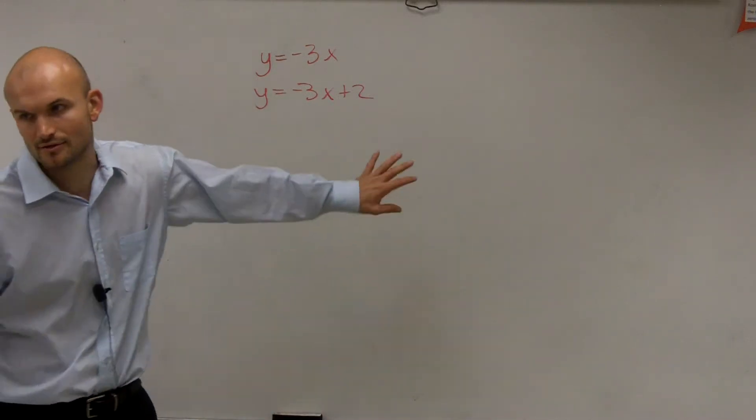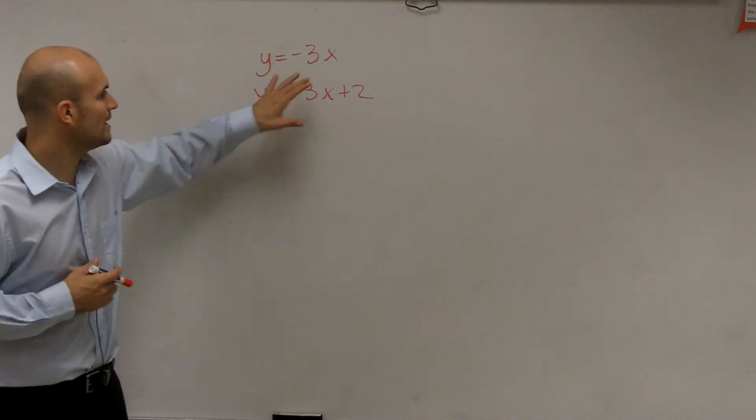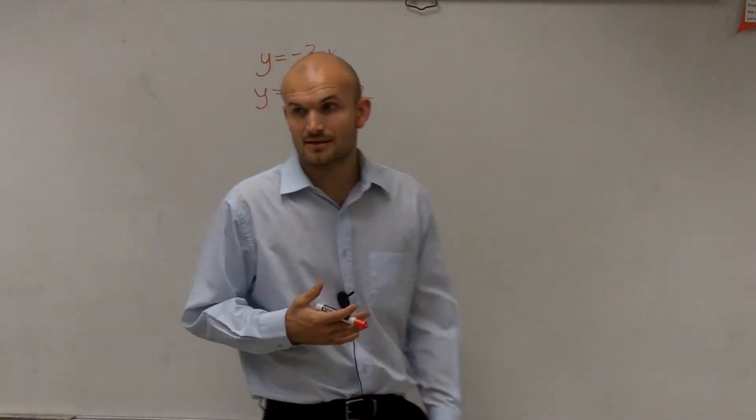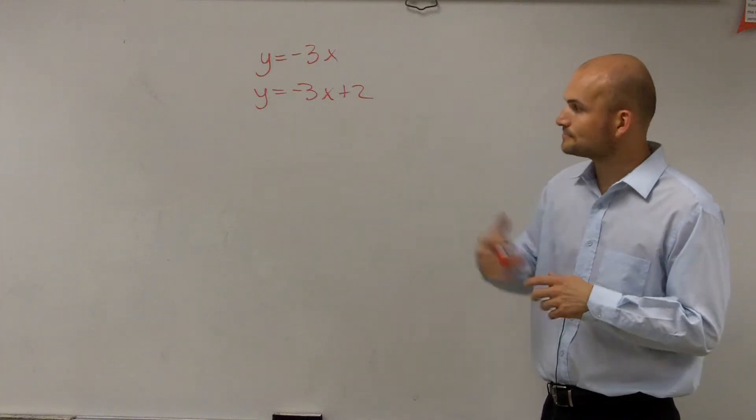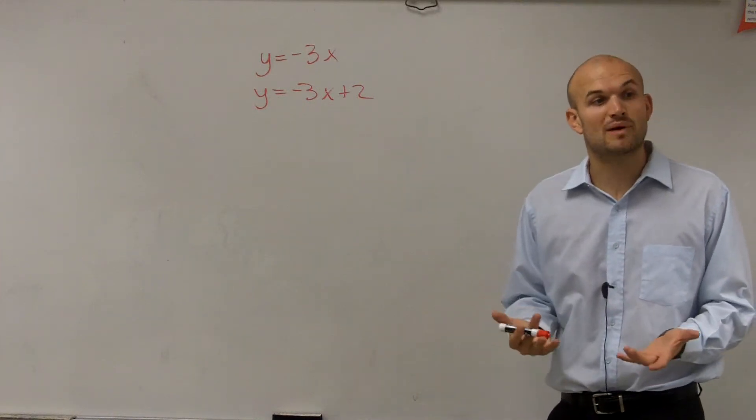I want you to be looking at this if you haven't. So what I have is y equals negative 3x, and then y equals negative 3x plus 2. All right? So what we need to do is we need to graph this.